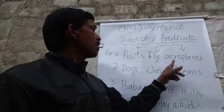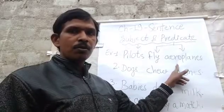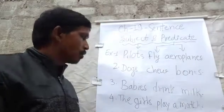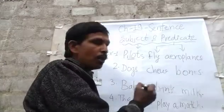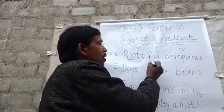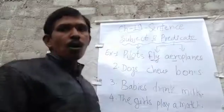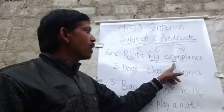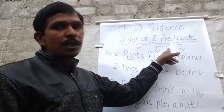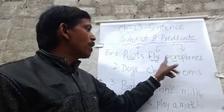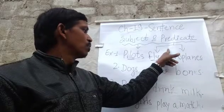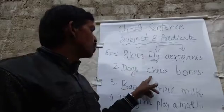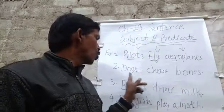Pilots fly aeroplanes. Here, 'pilots' is the subject, 'fly' is the verb, and 'aeroplanes' is the object. Both 'fly' and 'aeroplanes' together make the predicate — when verb and object combine, they form the predicate.